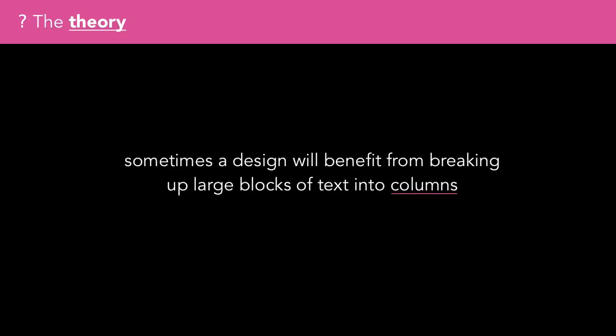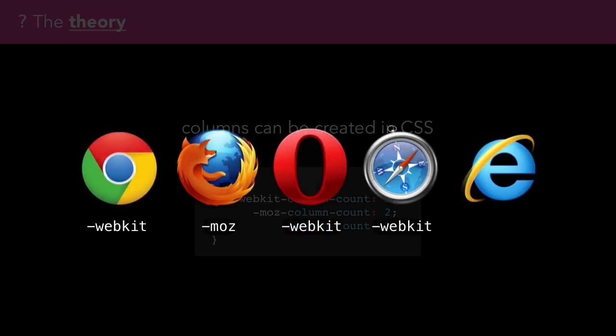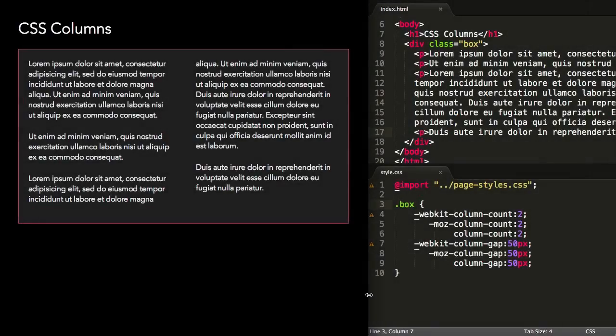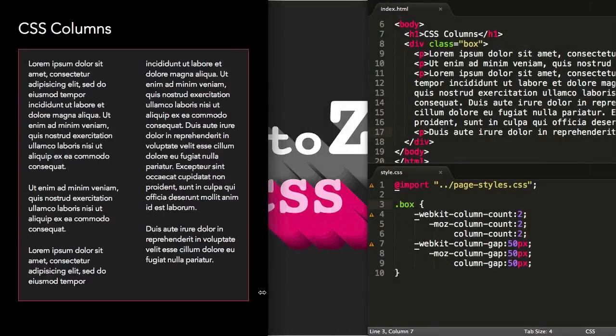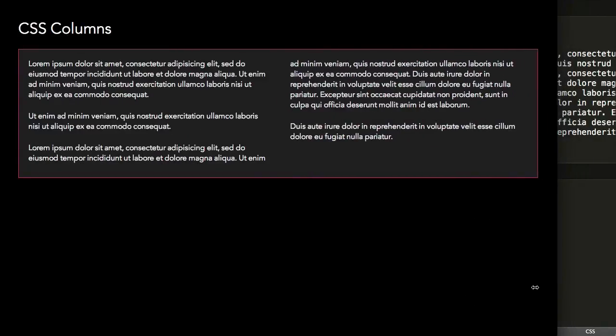Sometimes a design will benefit from breaking up large blocks of text into multiple columns. This used to be the realm of some quite fiddly JavaScript, but can now be done simply in CSS, using the column count property. This property is supported in all modern browsers, but requires prefixing in everything except IE. Inline content is automatically reflowed as the available space changes. Pretty sweet.